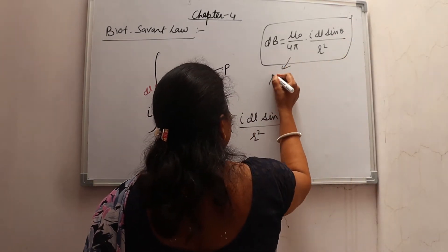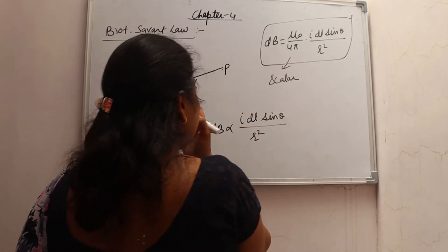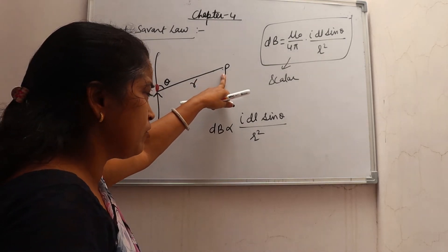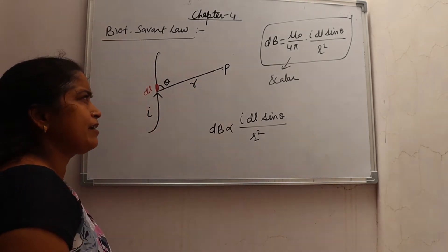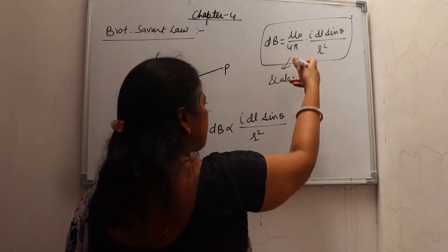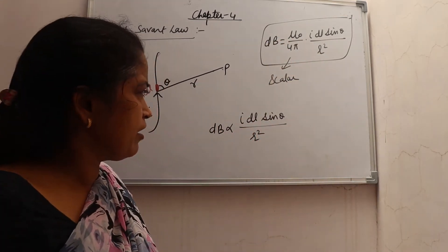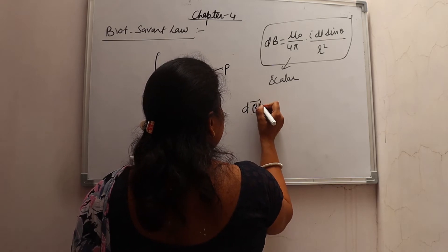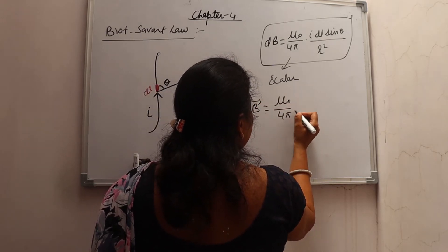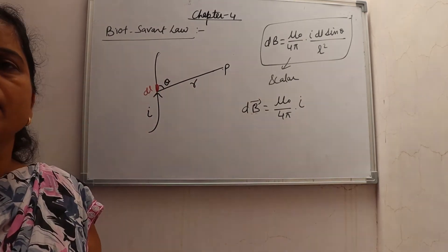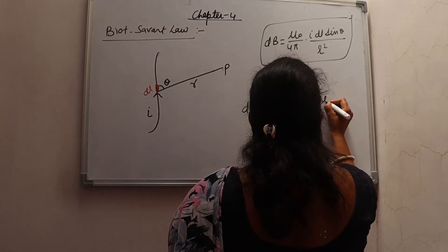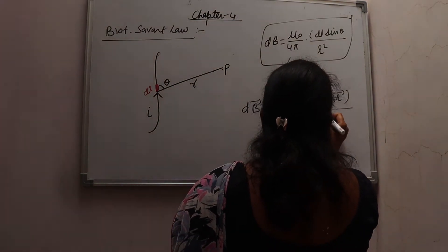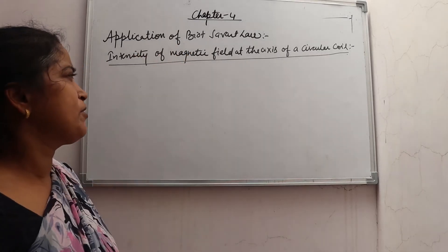So we can write: DB equals mu naught upon 4π, times I·DL·sinθ upon R square. This is the scalar form. And the intensity of magnetic field — we have calculated this small amount at point P due to this small length element. If you want to do it for the whole wire, integrate it or take summation and you will get the answer. The vector form can be written as: DB vector equals mu naught upon 4π times I, DL vector cross R vector upon R cube.